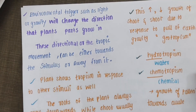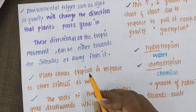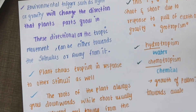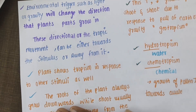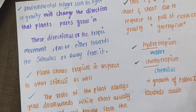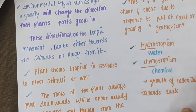We will wrap up this chapter soon. One part is moving away from the stimulus and another part is moving towards the stimulus. Plants show tropism in response to other stimuli as well — not only for sunlight and gravity, but also for water and chemicals. The tropic movement happens due to growth in response to those stimuli.